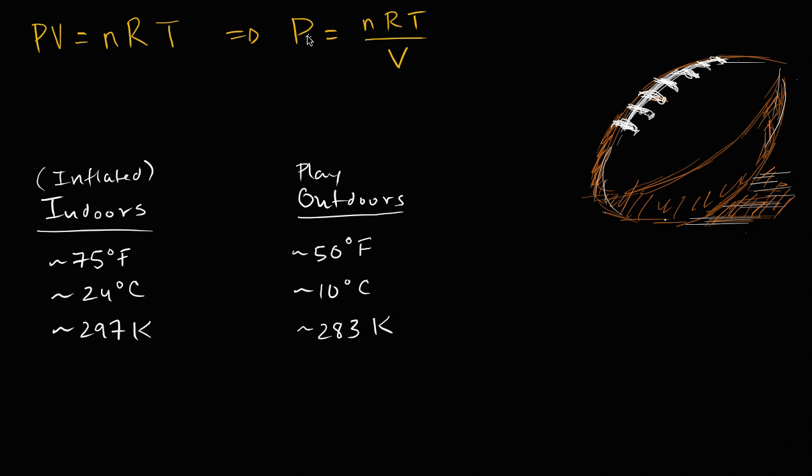The pressure drop that was actually measured was a pressure drop in gauge pressure, and this is an important point because it was glossed over in some of the initial analyses. The gauge pressure indoors, where the ball was inflated, was 12.5 pounds per square inch, and the gauge pressure outdoors, where the balls felt like they were deflated somehow, was 10.6 pounds per square inch. So to see if these numbers are consistent with each other, or consistent with no foul play, let's simplify our ideal gas law a little bit.